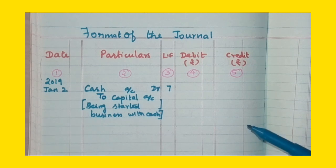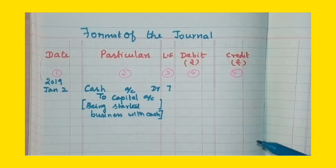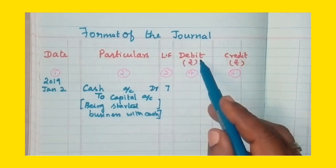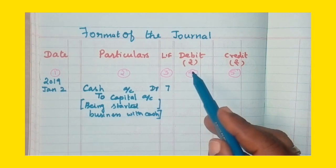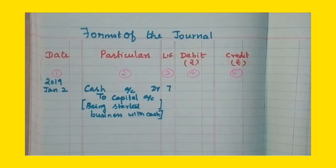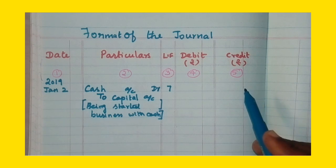We can check the page number and find the source document such as vouchers, bills, or cash memos. The next columns are the Debit and Credit columns, in rupees. Every transaction has one debit and a corresponding credit of the same amount, so the amount column is divided into debit and credit.